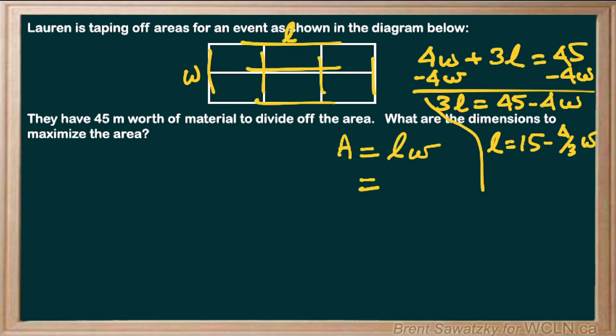We can say let's replace that l with our new equation, so 15 minus four thirds w times w. Now we have an equation that we can plug into Desmos.